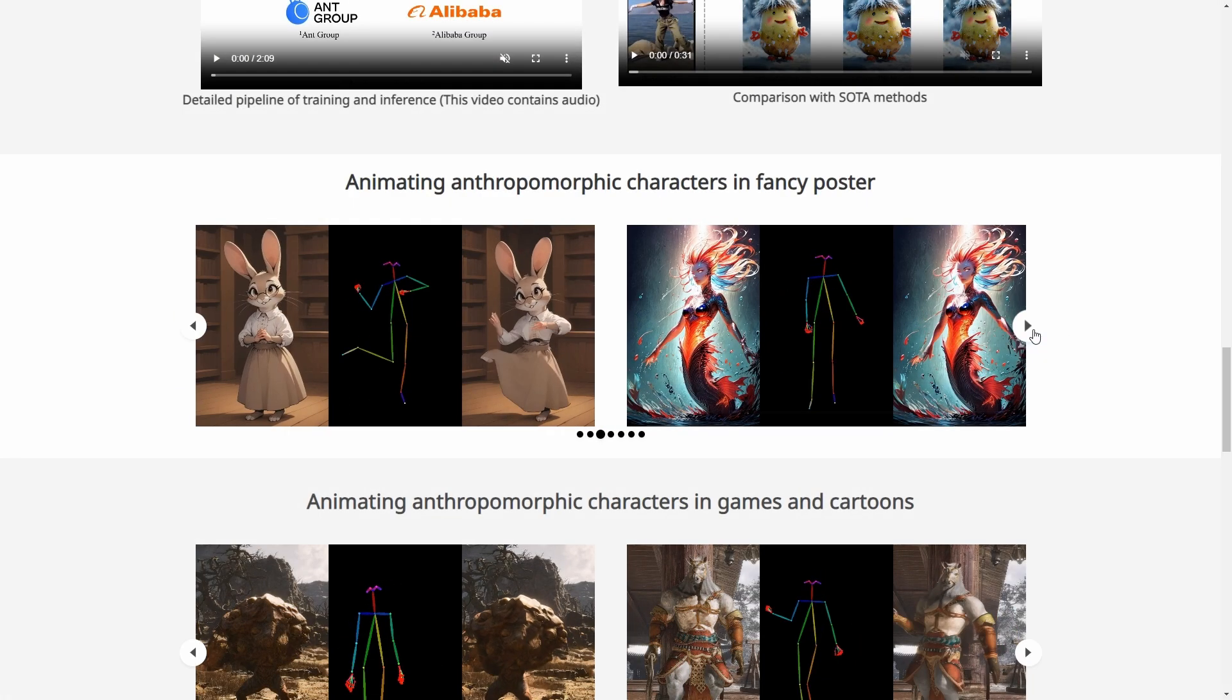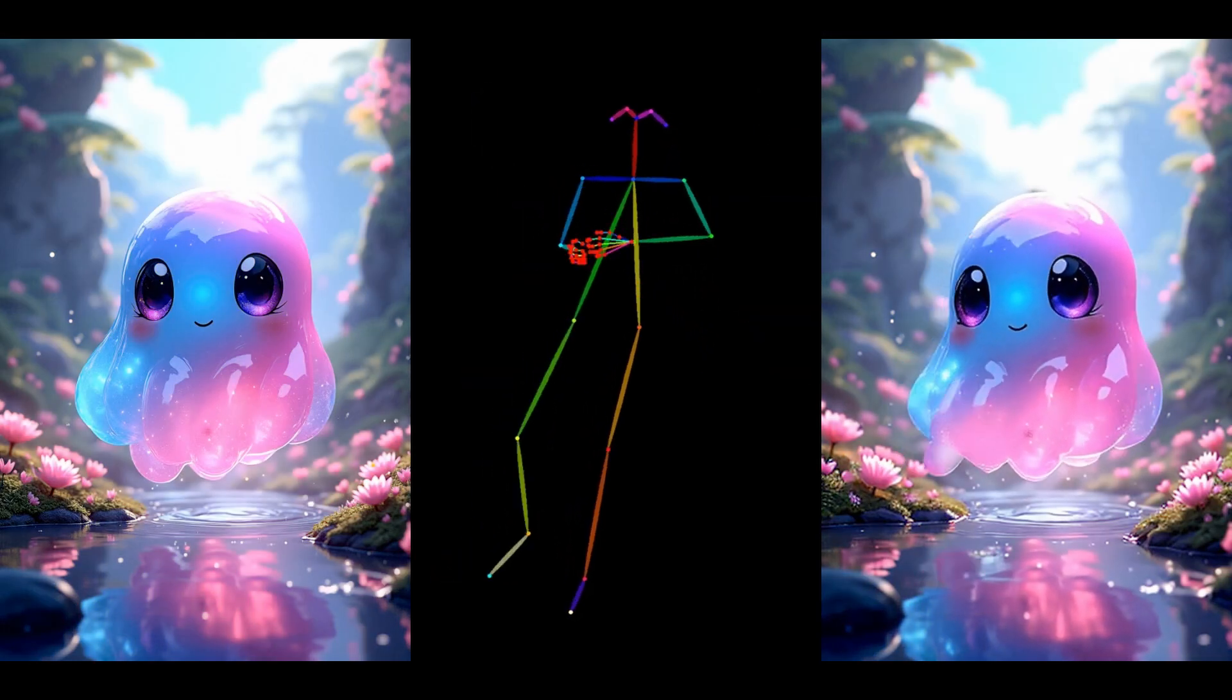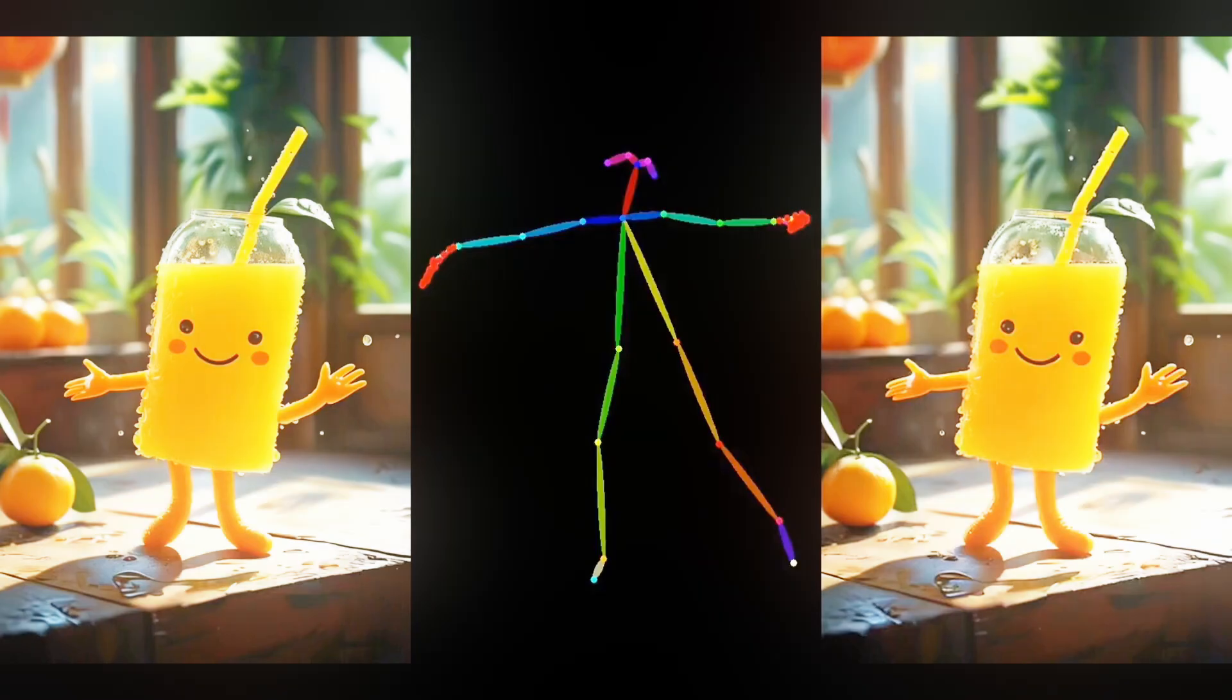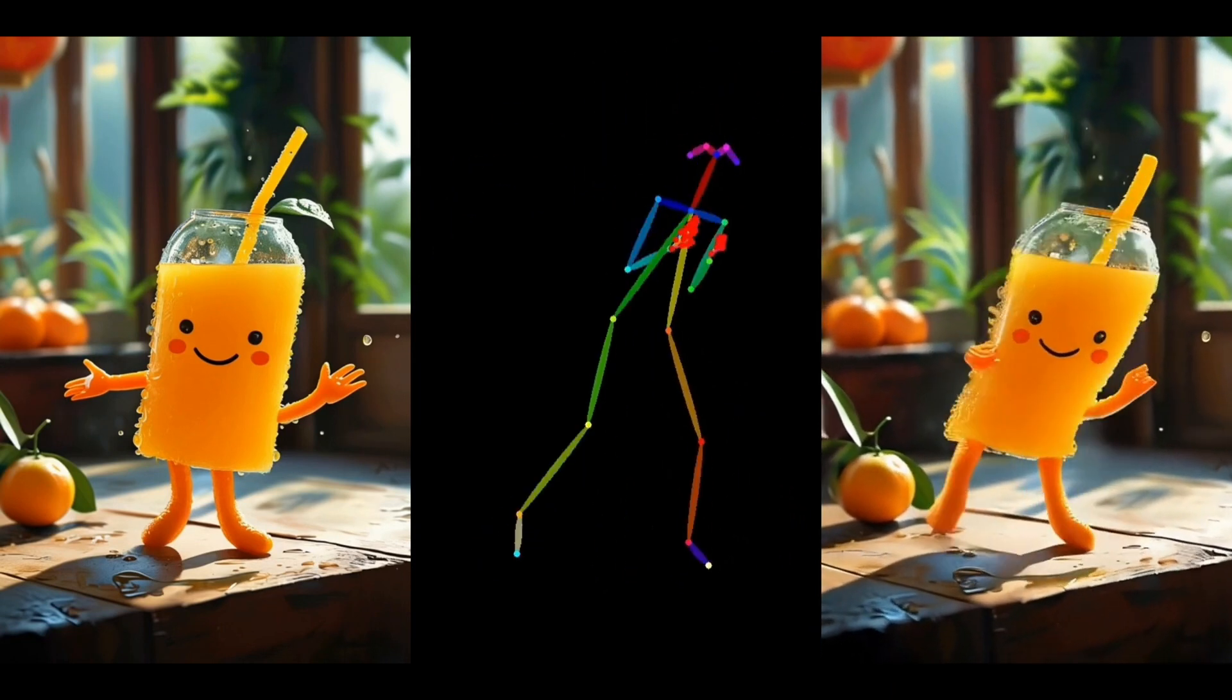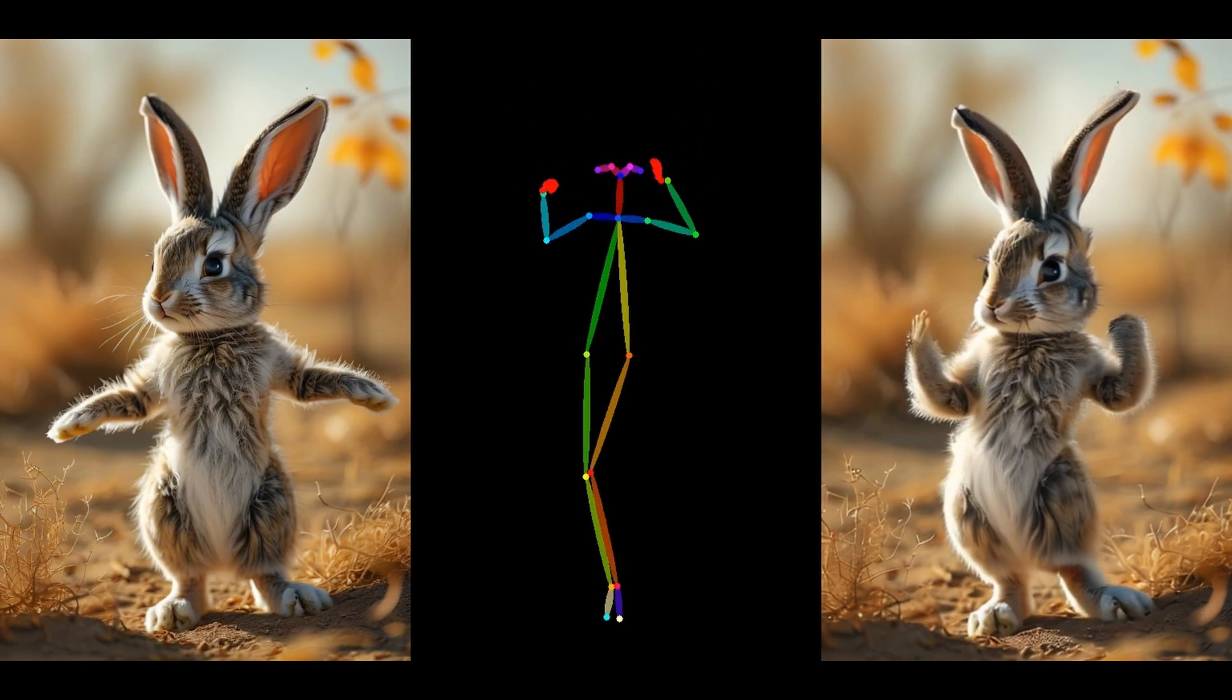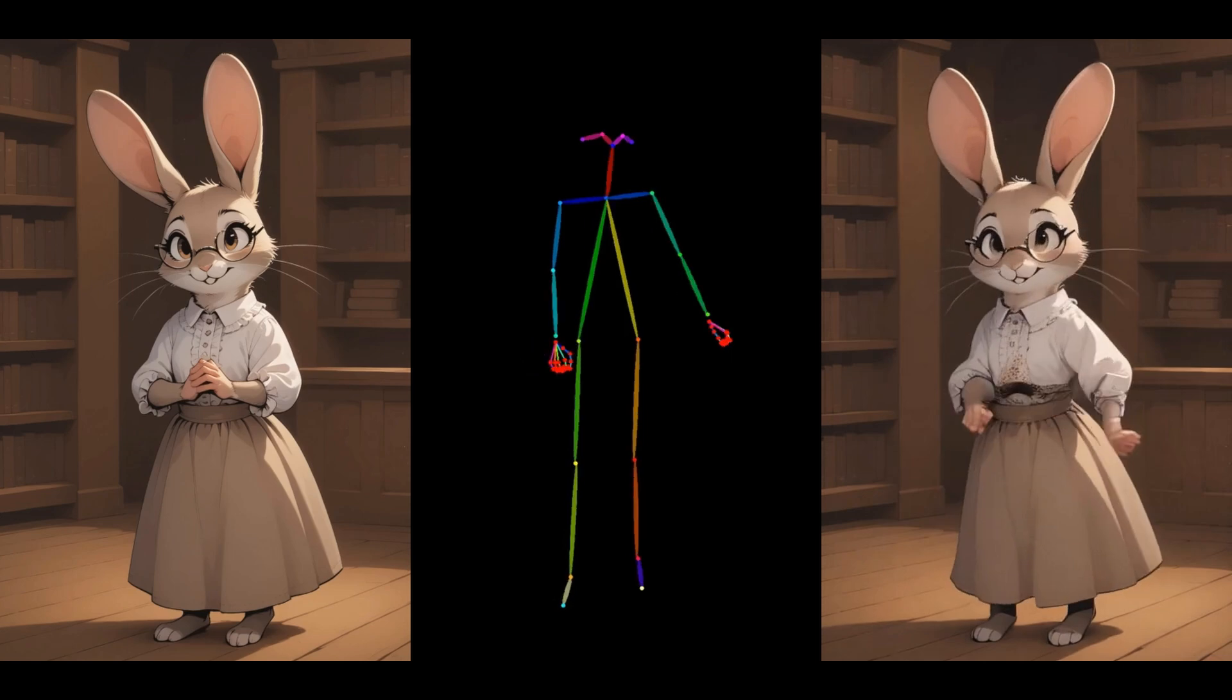Let's take a look at some examples of Animate X in action. Here's a blob character with no limbs, traditionally tricky to animate, but Animate X handles it effortlessly. Next we have an orange juice character, another non-human figure with odd proportions, and once again, Animate X animates it beautifully. These examples show that the tool can work with characters that have limbs or shapes very different from humans, and this is what sets Animate X apart.